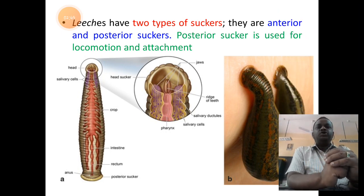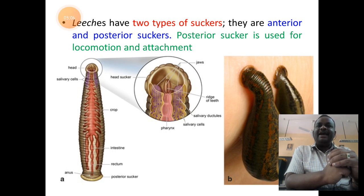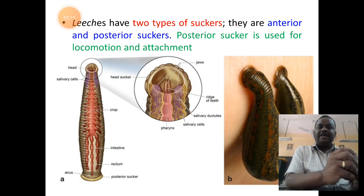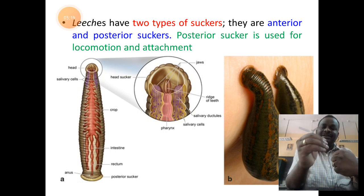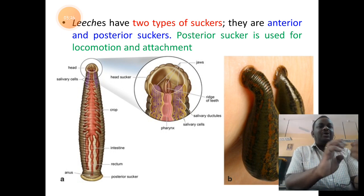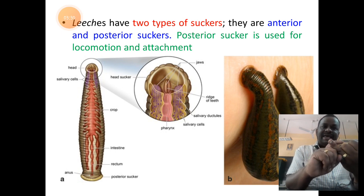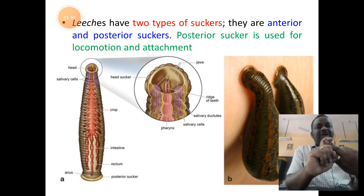Leeches have two types of suckers: the anterior or upper sucker, and the posterior or lower sucker. The anterior sucker helps in feeding, that is drawing up blood from vertebrate animals. The posterior sucker helps in attachment of the leech onto the vertebrate animal and also helps in locomotion. So attachment and locomotion are assisted by the posterior sucker, whereas the anterior sucker is involved in the feeding process.